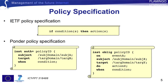whereas negative authorizations define the actions that subjects are prohibited from performing. The policy listed on the bottom left presents the syntax of a positive authorization. It specifies that subject A is authorized to access target B under some conditions.